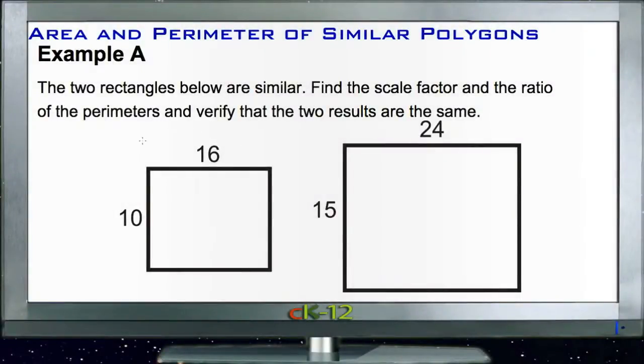For Example A, we have two rectangles below that are similar, and we need to find the scale factor and the ratio of the two perimeters of the figures and verify that those two things are in fact the same. Of course they should be if the figures are similar, but let's take a look and see.